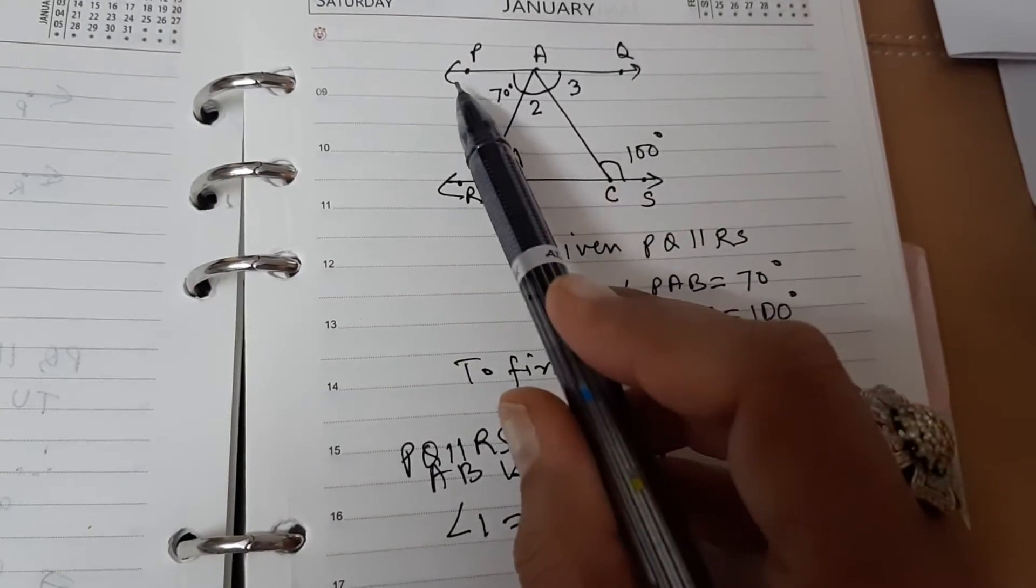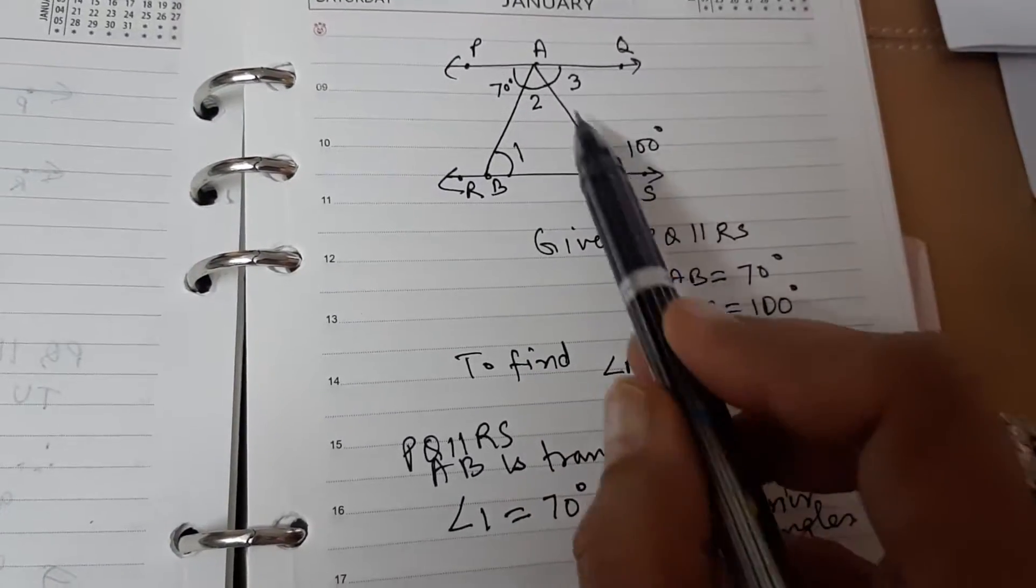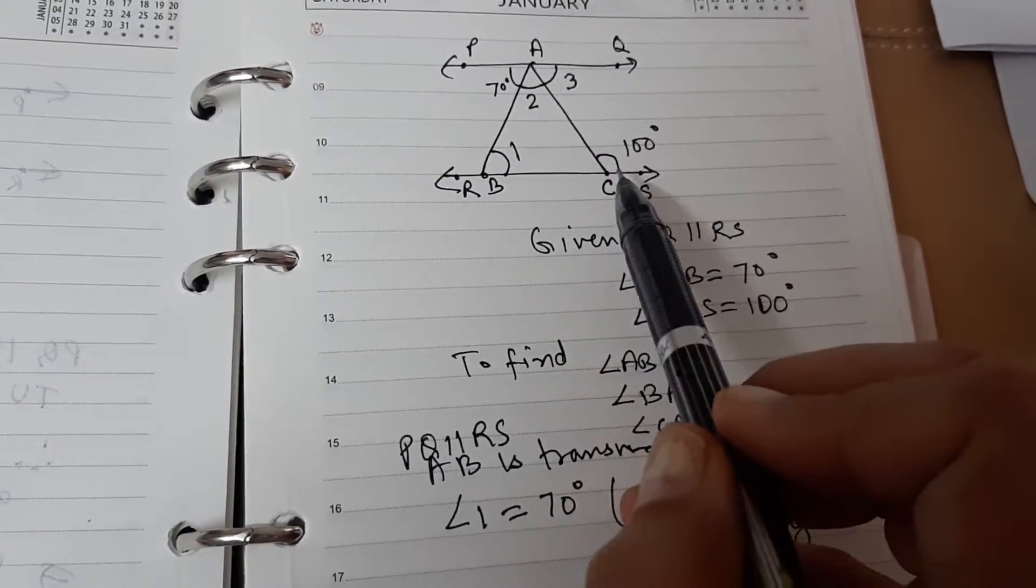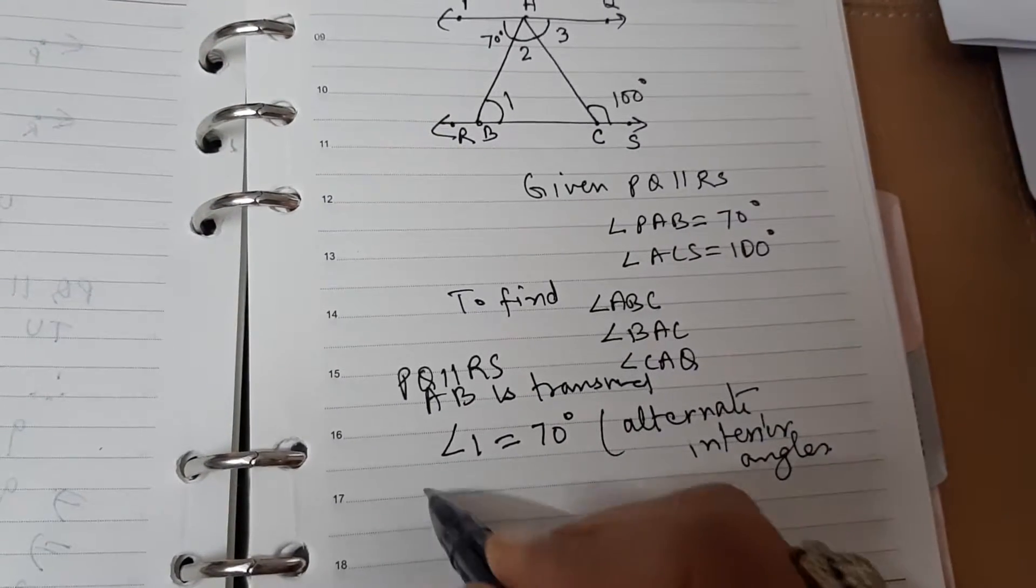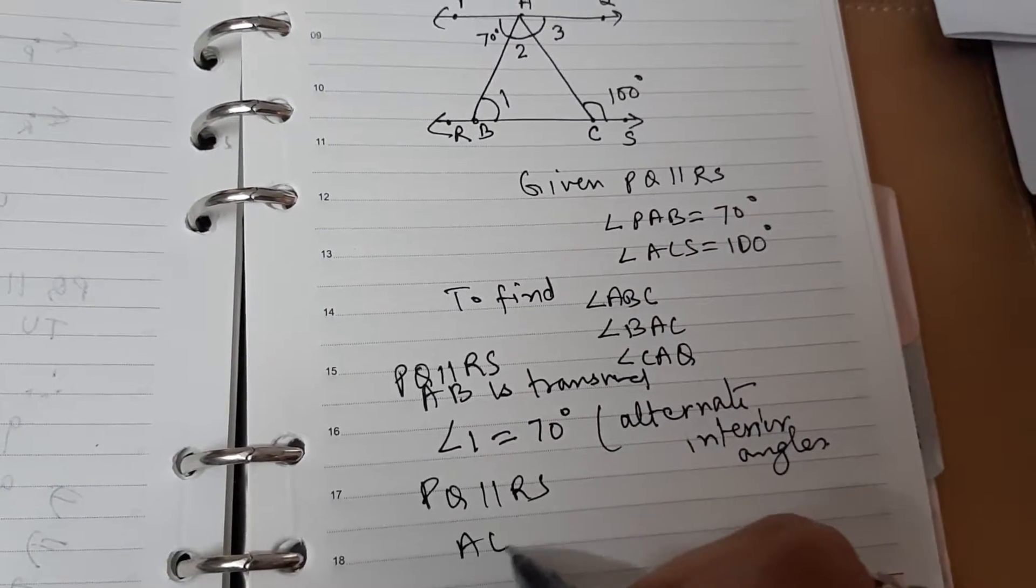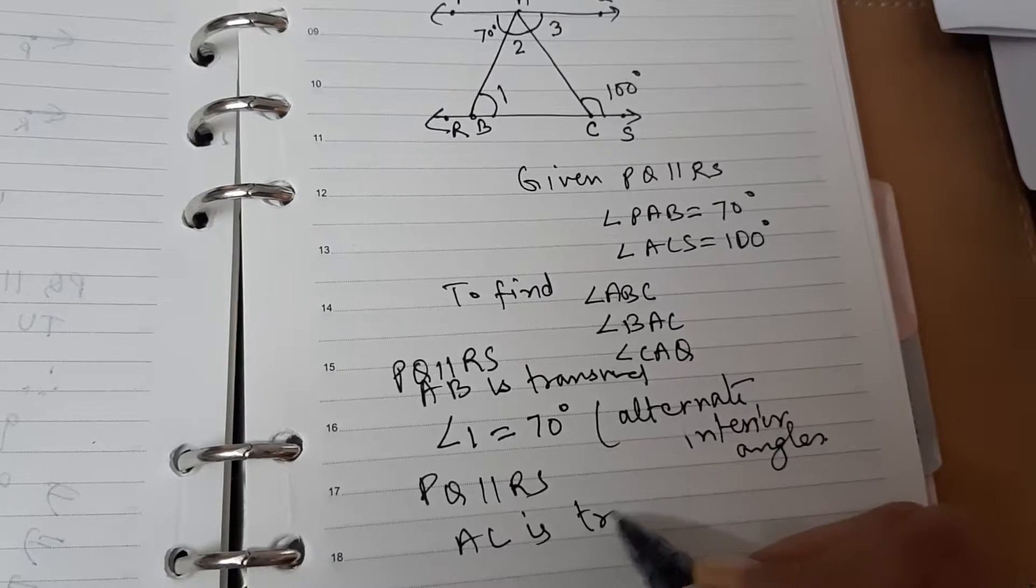Now, consider PQ parallel to RS and AC as transversal. AC is transversal.